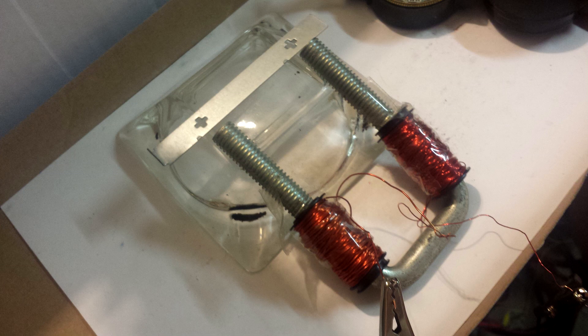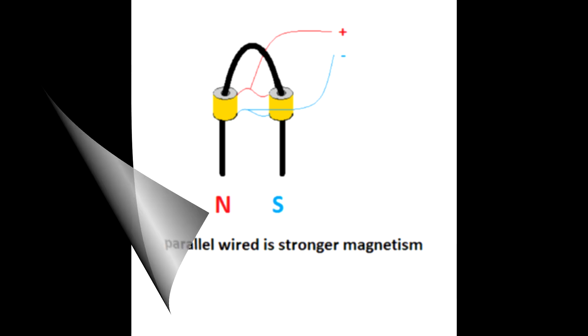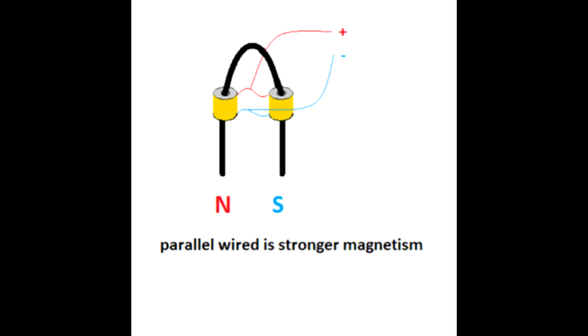Ed wants you to make an electromagnet with both poles at one side of the magnetic core. Parallel wraps have a stronger magnetic field. Ed has you wrap an electromagnet in a parallel wrap, making opposite poles on the horseshoe core.